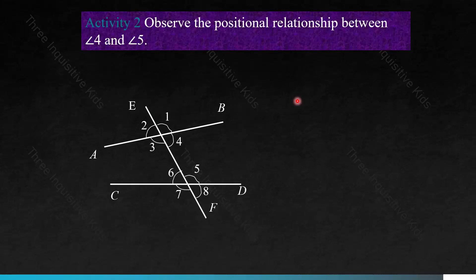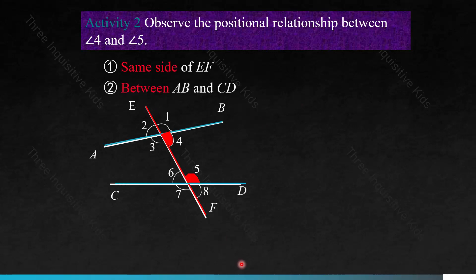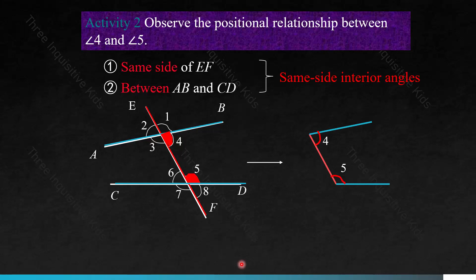Observe the positional relationship between angles 4 and 5. For angles 4 and 5, we see that they are on the same side of line EF, and that they are also between AB and CD. These are the qualities of same-side interior angles. As you can see, it forms a C or U-shaped figure.